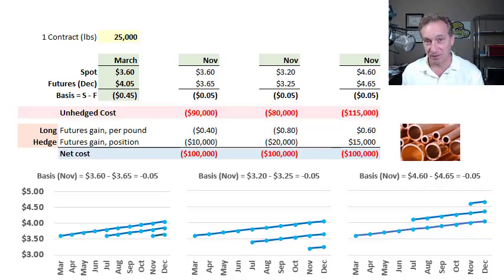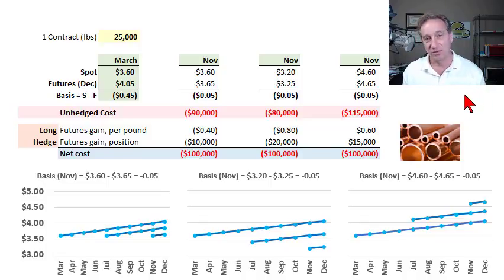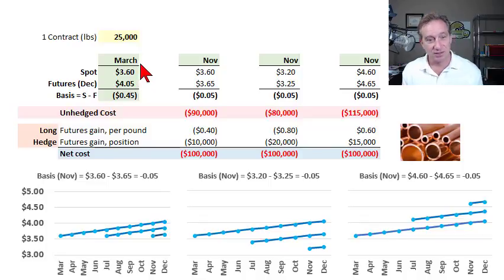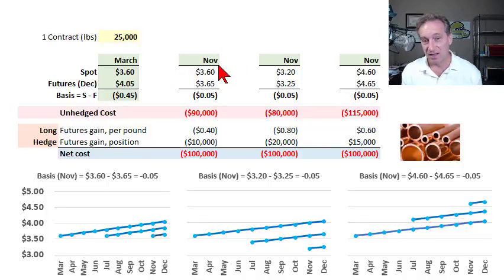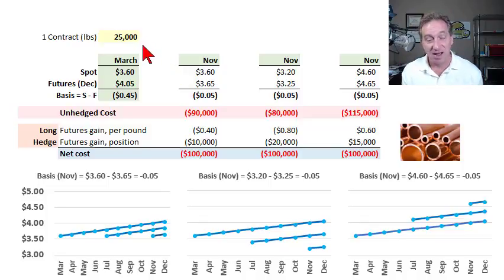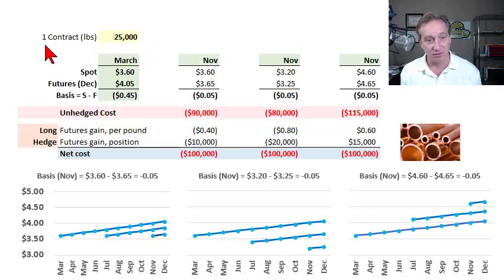In order to illustrate basis risk, imagine that we are an industrial manufacturer who uses copper as an input, so we purchase copper. Today is March 2018, and we have a plan to purchase copper in the future — near the end of the year in November 2018. We want to purchase 25,000 pounds of copper, which is conveniently the size specification of a single futures contract for copper.